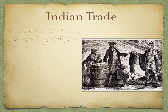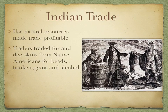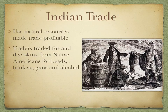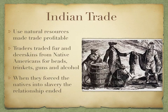South Carolina also dealt in Indian trade, using natural resources to make trade profitable. Traders exchanged fur and deerskins from Native Americans for beads, trinkets, guns, and alcohol. They tried to force Native Americans into slavery, but that put a halt on the relationship because Native Americans knew the land and could escape more easily than African slaves. The Native American trading relationship largely ended when they started trying to enslave them.